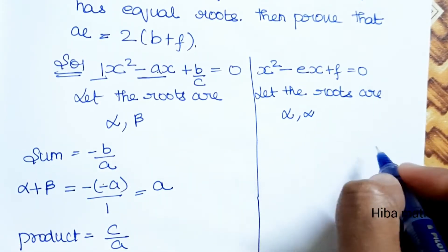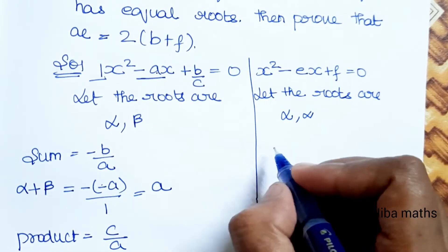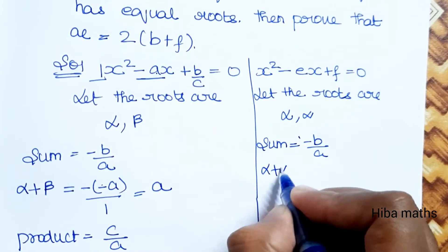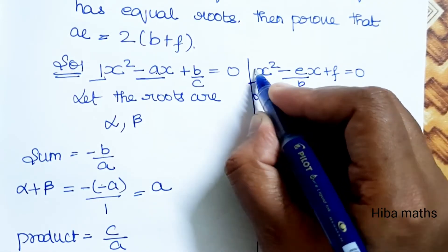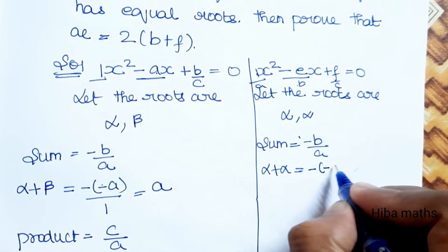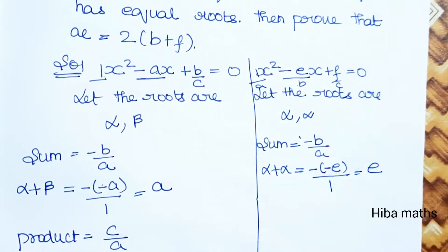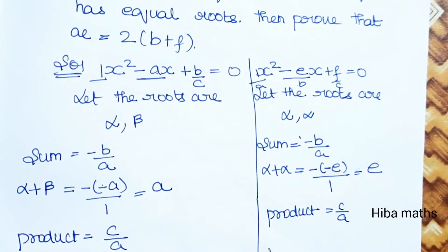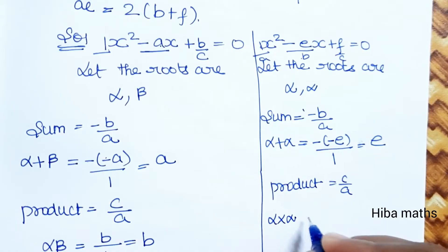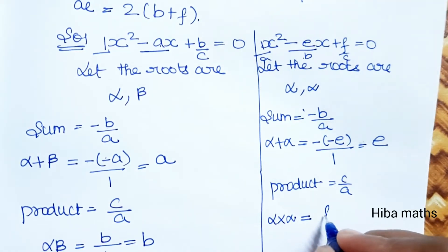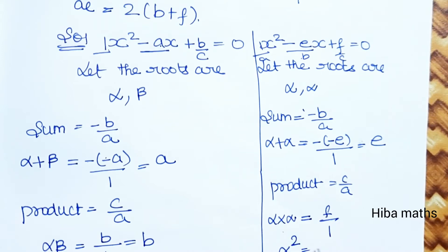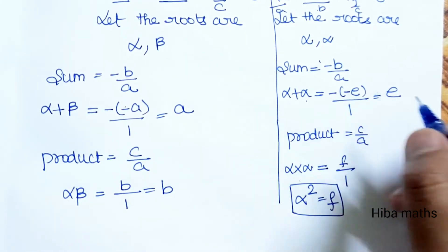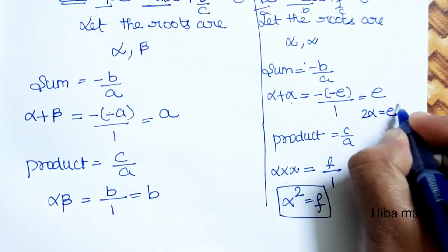For the second equation x² - ex + f = 0: the sum of roots alpha + alpha equals e, so 2·alpha = e. The product of roots alpha × alpha = alpha² equals f.